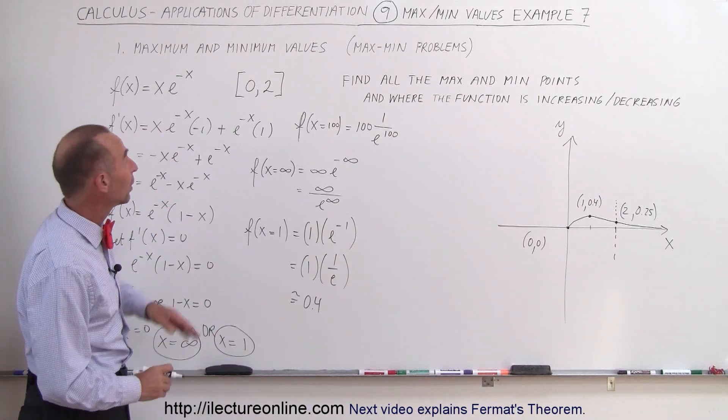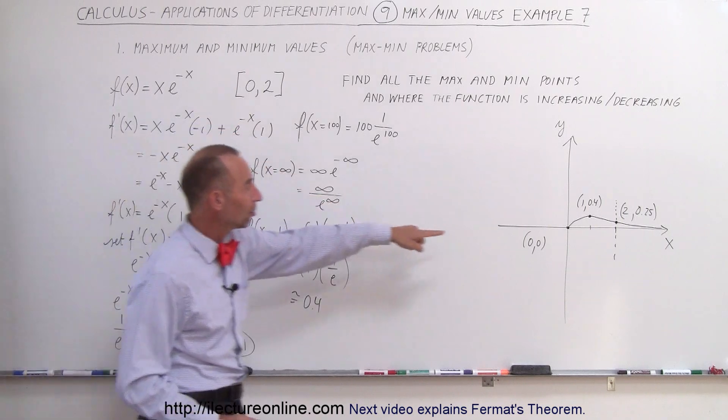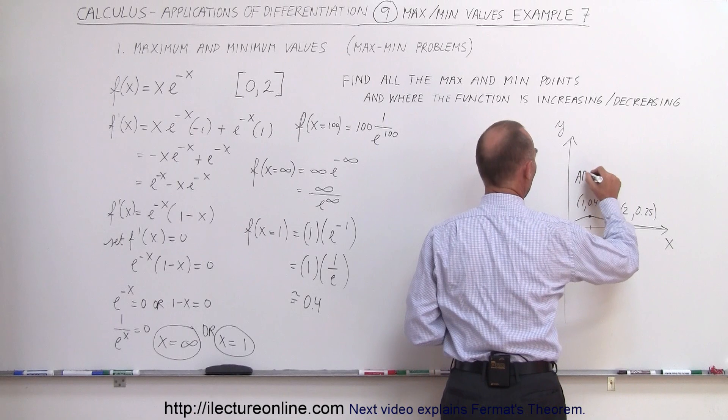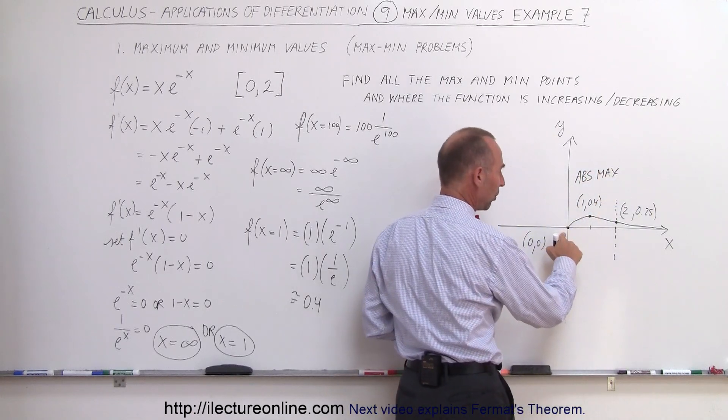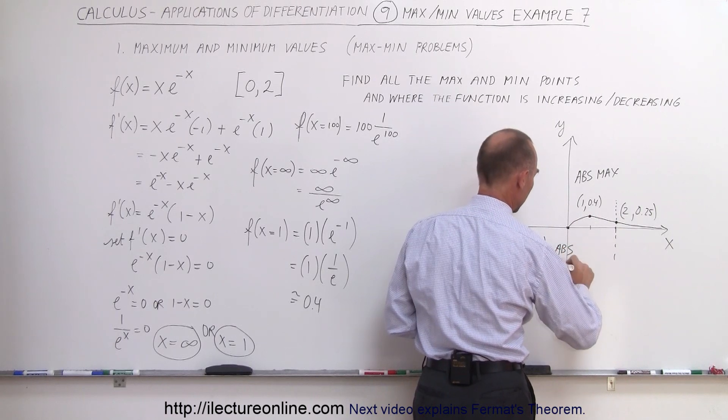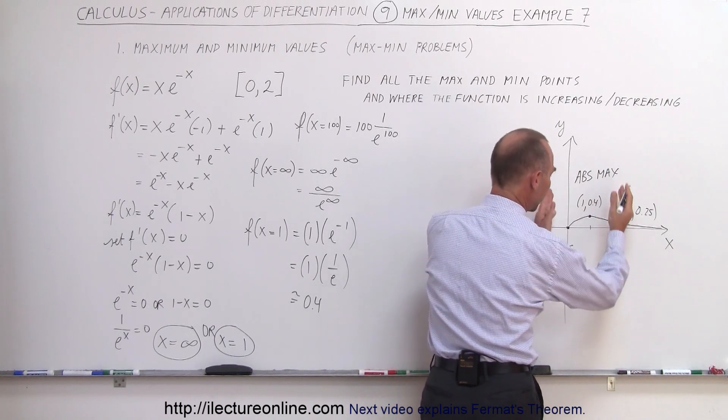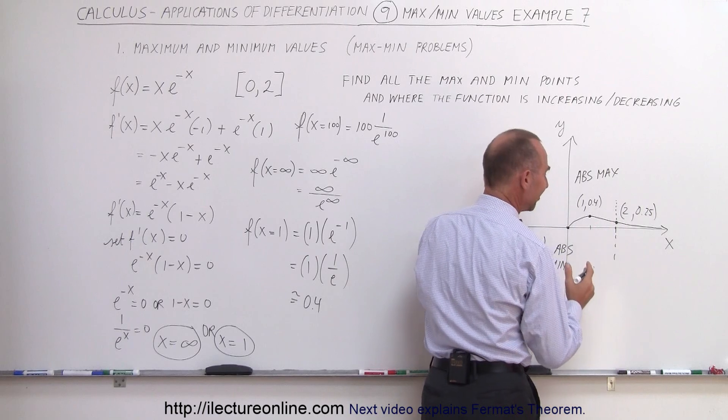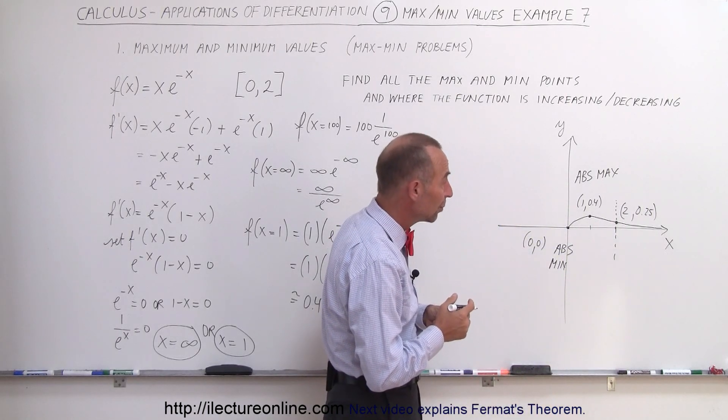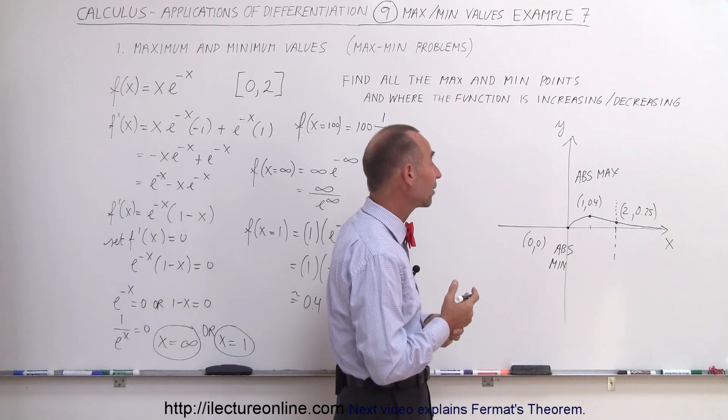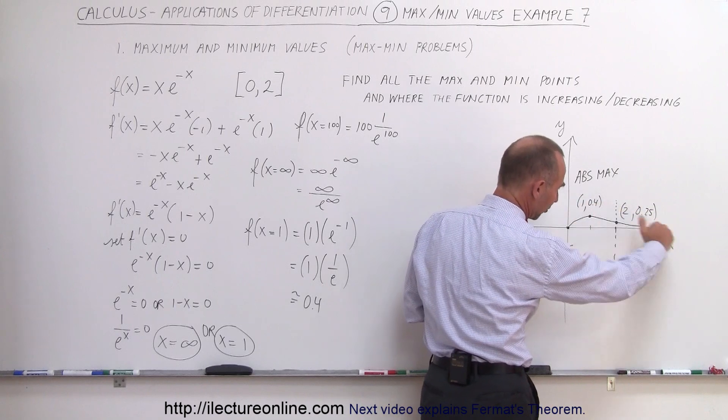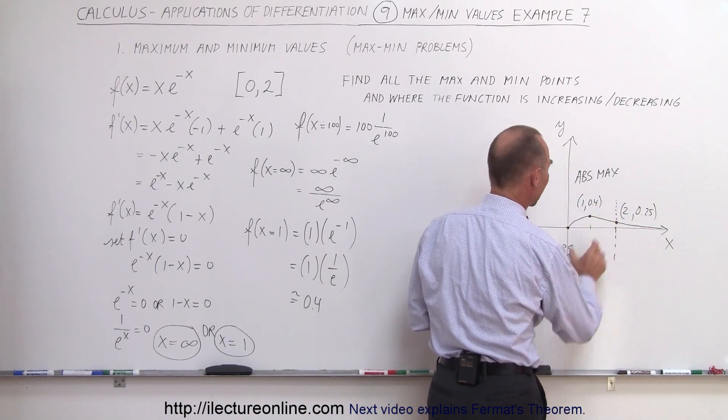Now we can evaluate it. We know we have an absolute maximum value at this location, so this is our absolute max. This is the lowest point on our interval, so this is an absolute min. This point here on our interval from 0 to 2 is not either a max or min - the function just continues on. I would just leave that. Call this the absolute max, this the absolute min.